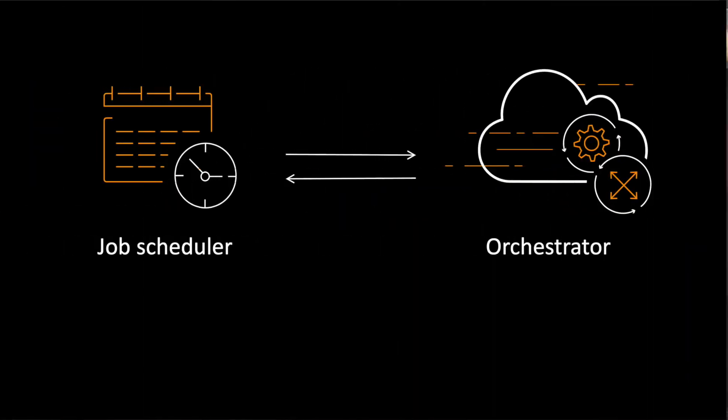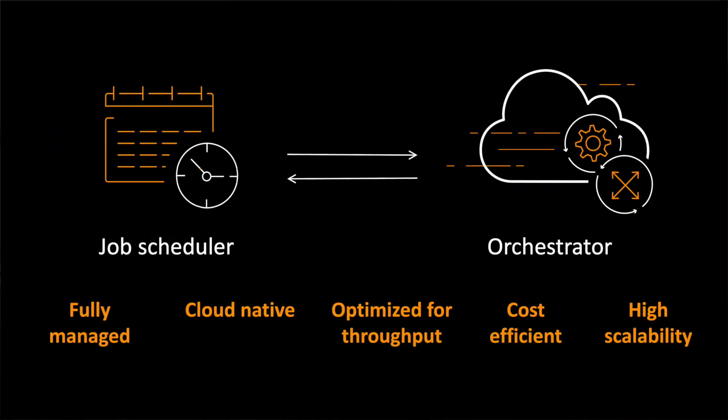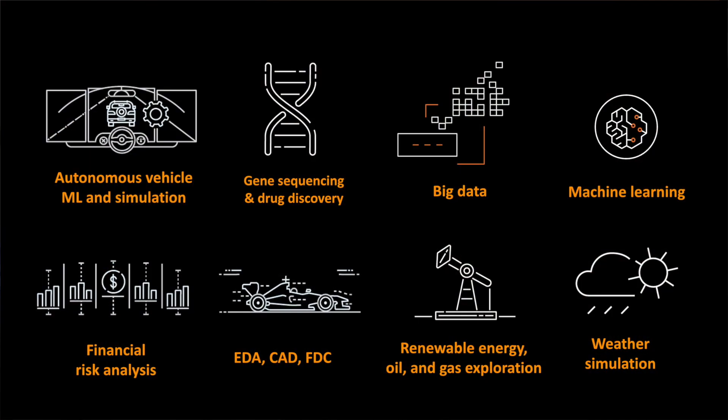That covers the high-level overview of AWS Batch. To review: AWS Batch is both a job scheduler and a resource orchestration engine. It is a fully managed, cloud-native service that integrates with other AWS services and is optimized for throughput and cost. It makes the high scalability of the cloud available for your workloads. Customers across many industries leverage Batch, including drug discovery and genomics, computational fluid simulations, financial risk modeling, and machine learning tasks such as large-scale model training and batch inference using trained models, just to name a few.